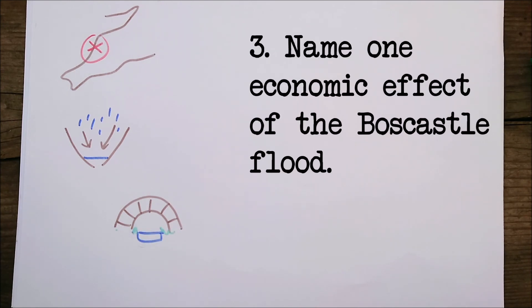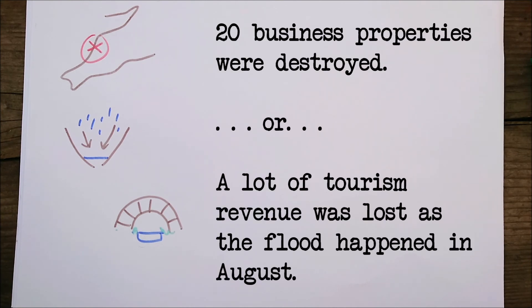Number three. Name one economic effect of the Boscastle flood. Well, 20 business properties were destroyed. And this was the height of the tourism season in August. And so this had a massive effect on the local economy.